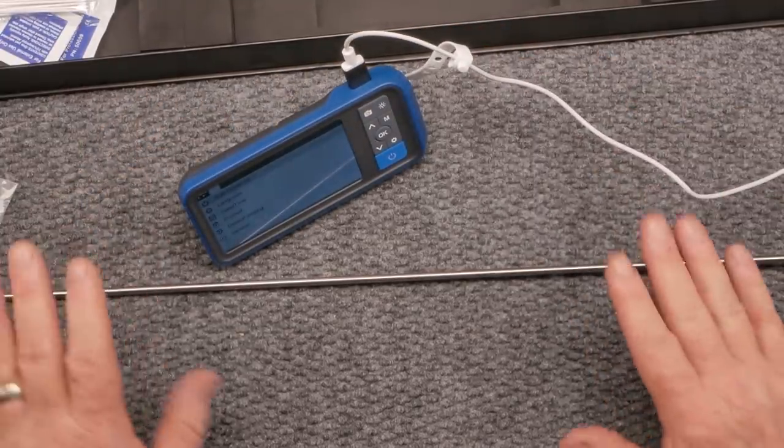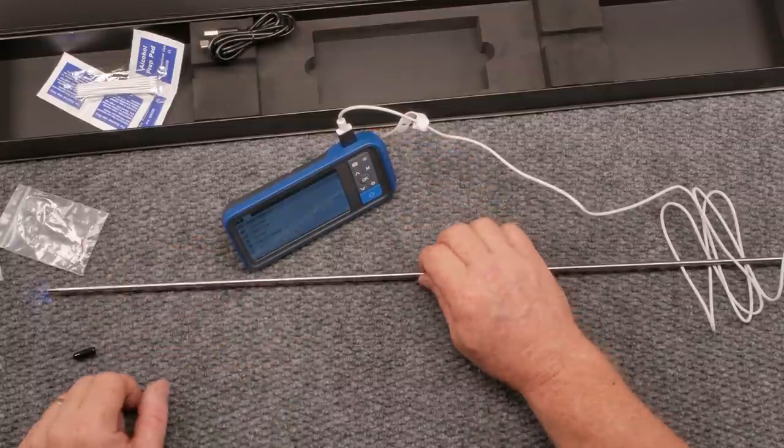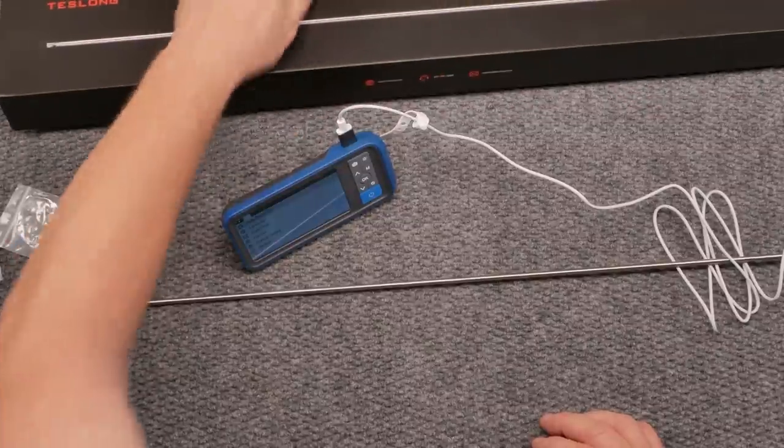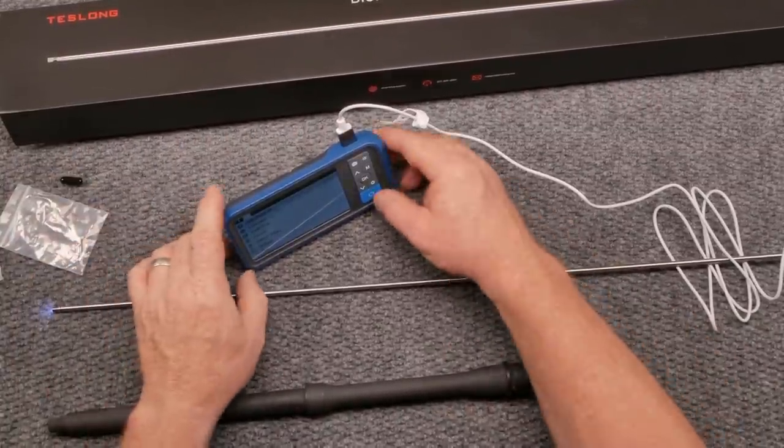Now the cool thing about this is that you can take this to the range with you and use it to determine the quality or how your break-in is going or to see what your copper or carbon buildup is. Now real quickly, let's do this.